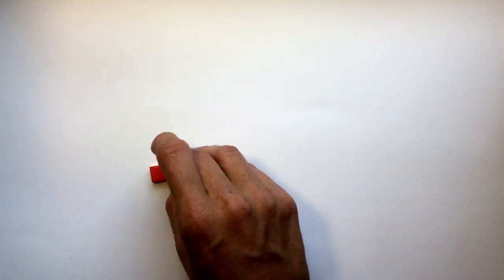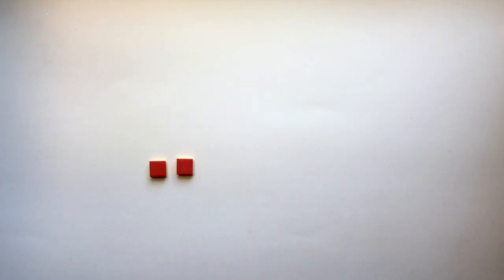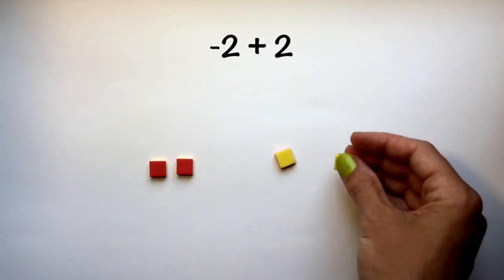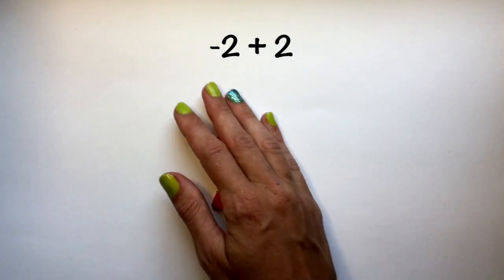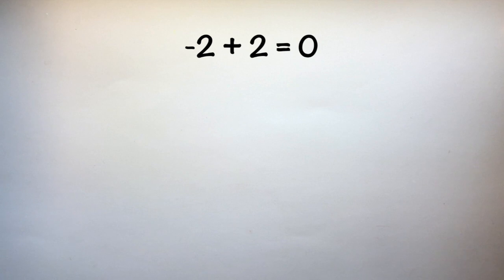A final example would be negative 2 plus positive 2. We end up with two zero pairs, which we can remove, and our sum would be zero. Thank you.